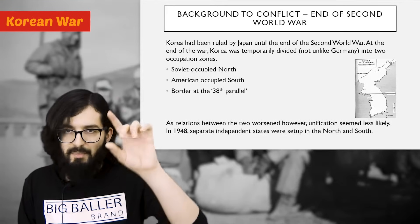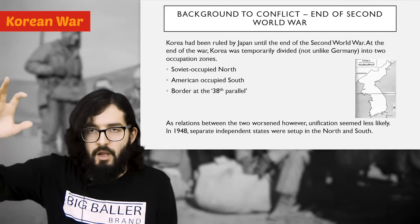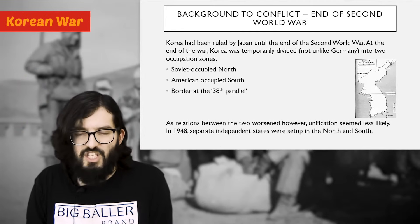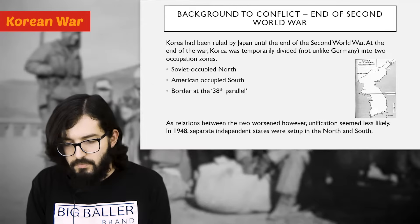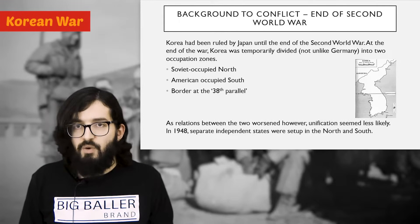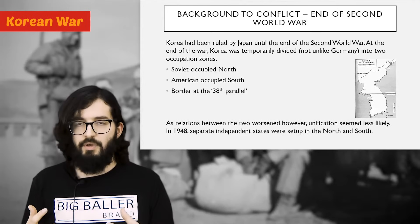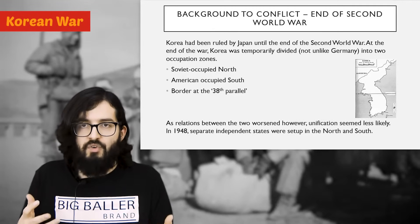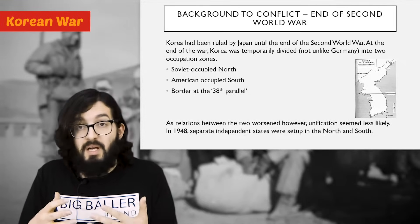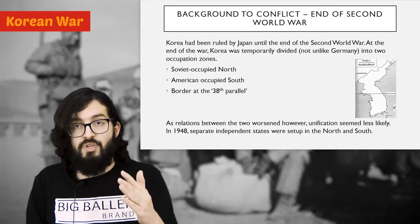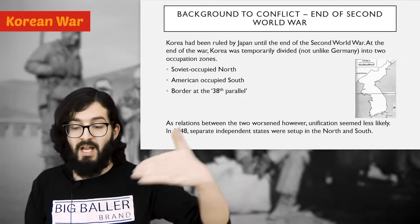The 38th Parallel was basically a line they stuck down the middle, meant to be temporary — similar to what happened in Germany, where the idea was for the two zones to be reunified. However, as the relationship between America and the Soviet Union soured, unification seemed less and less likely. Just like in Germany, Korea's initially temporary division became essentially a formal division, with separate independent states declared in both zones: North Korea becoming the DPRK and South Korea becoming the Republic of Korea.